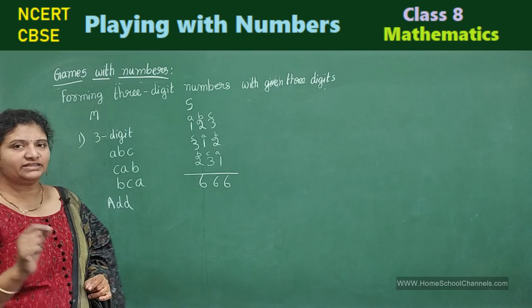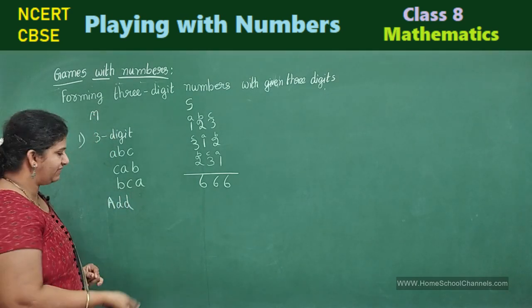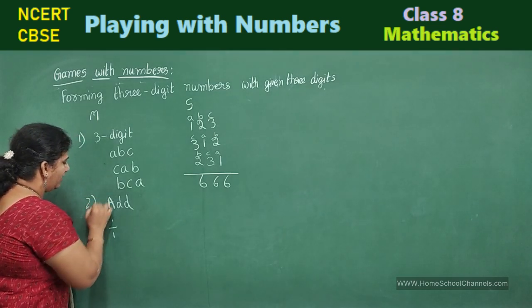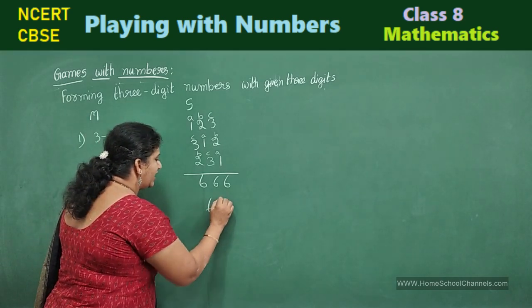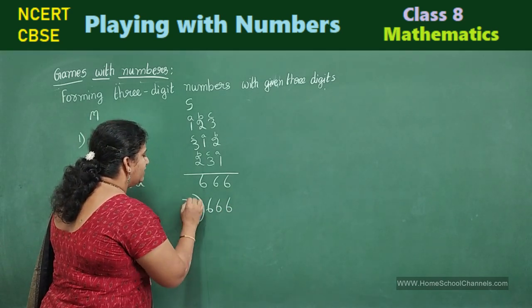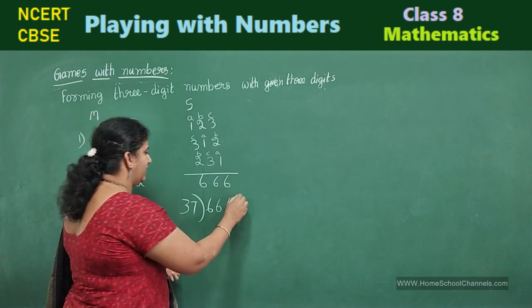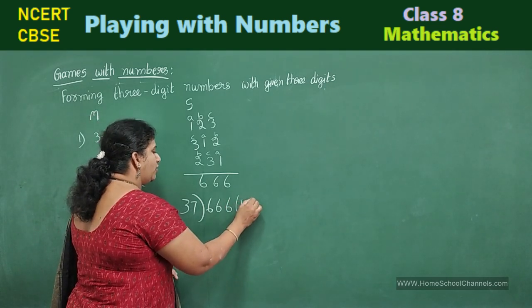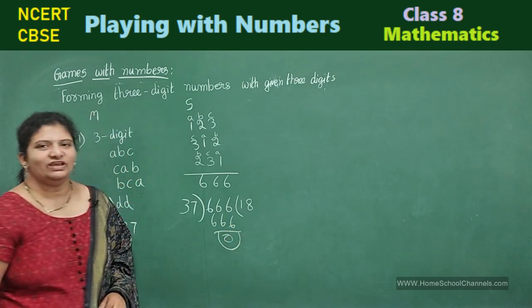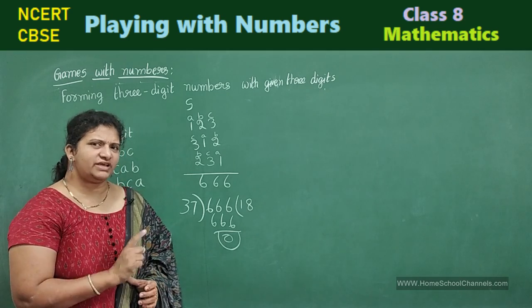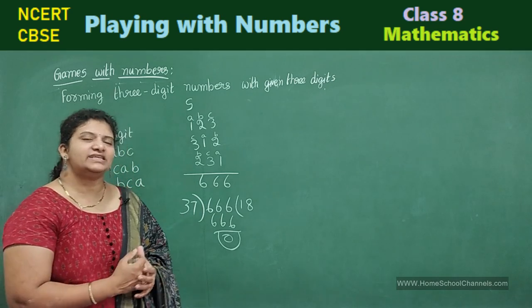And now, Meenakshi says, what the total you got now? For that, you divide by 37. Next step, what did she say here? Divide it with 37. Now, let us start dividing. 666 divide by 37. 666 if you divide with 37. And your quotient will be 18. And this will be again, 0. Now, Meenakshi says to Sundaram, Sundaram, is your remainder 0? Yes, Sundaram has shown how it is possible.